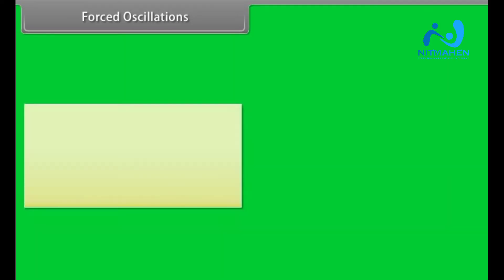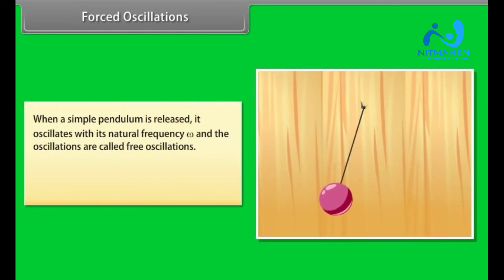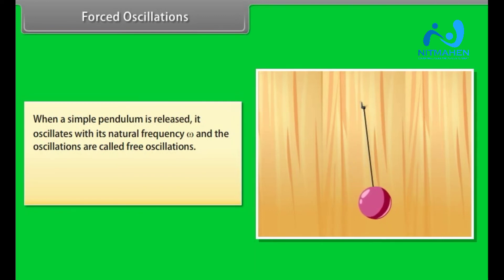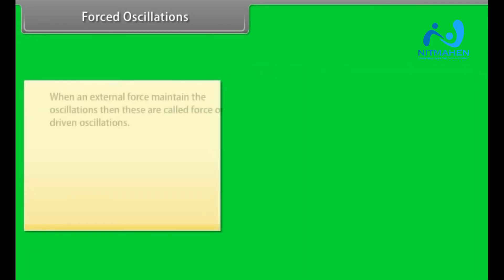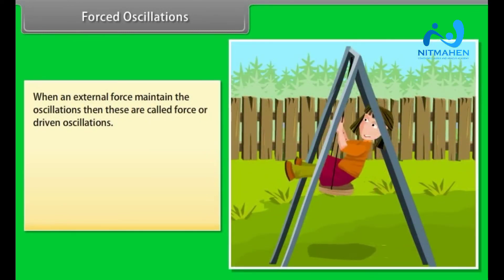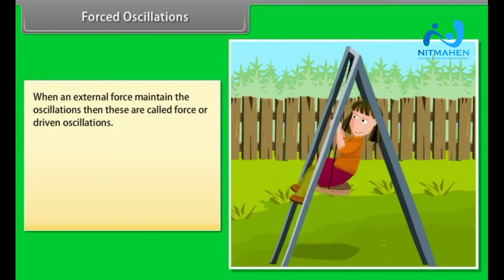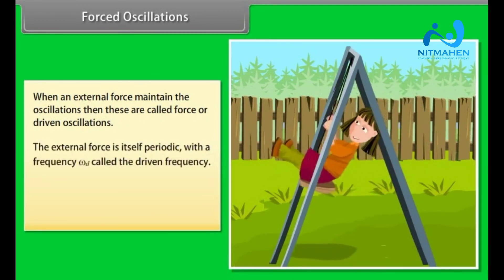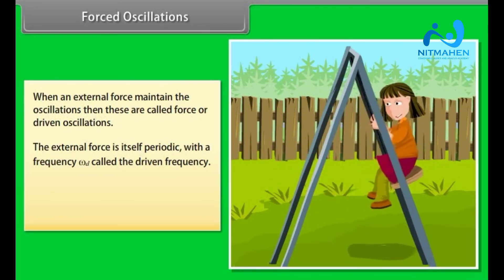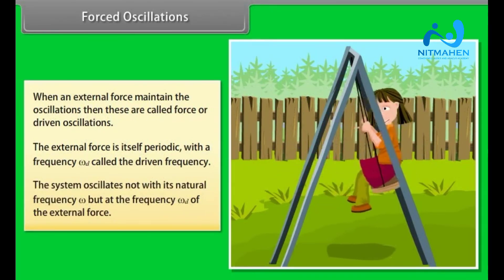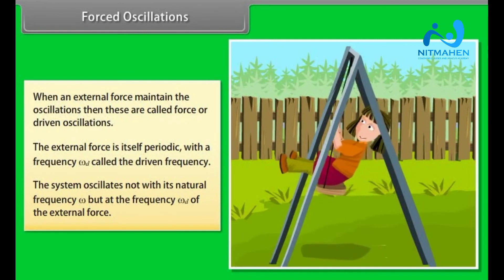Forced oscillations: when a simple pendulum is released it oscillates with its natural frequency ω and these are called free oscillations. All free oscillations eventually die out due to damping forces. When an external periodic force maintains the oscillations, these are called forced or driven oscillations. The external force has frequency ω_d, called the driven frequency, and the system oscillates not at its natural frequency ω but at the driven frequency ω_d.